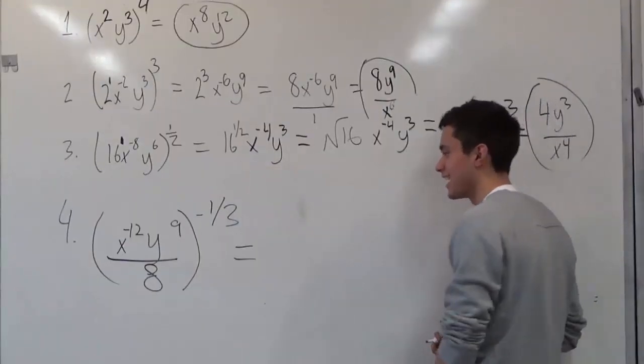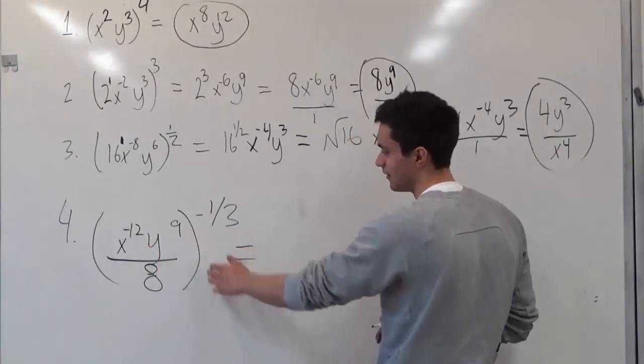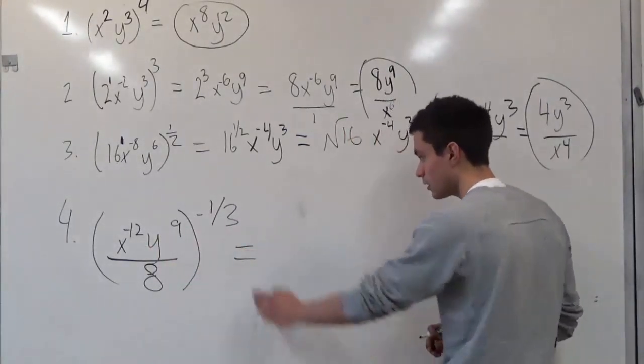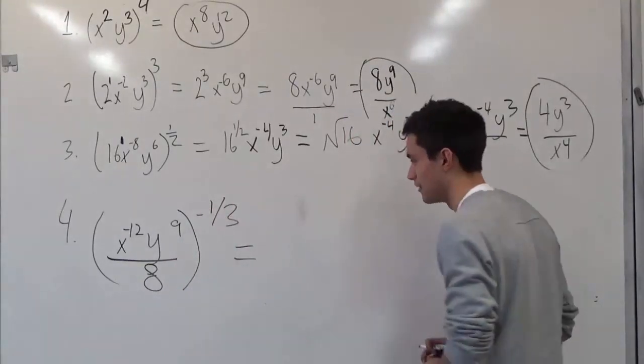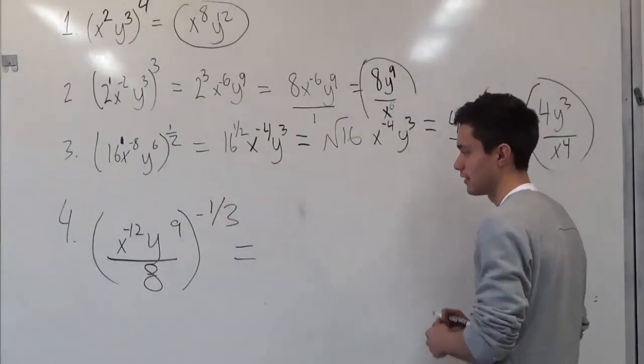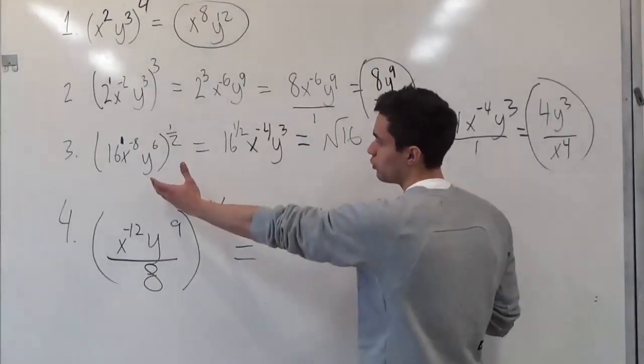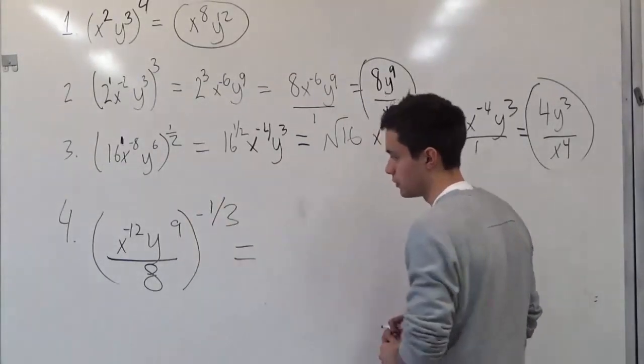So as you can see, we have x to the negative 12 times y to the ninth, all over 8, to the negative 1 third power. So we'll use our rules that we had before, by always multiplying the exponents.